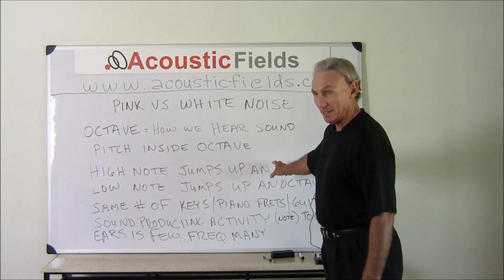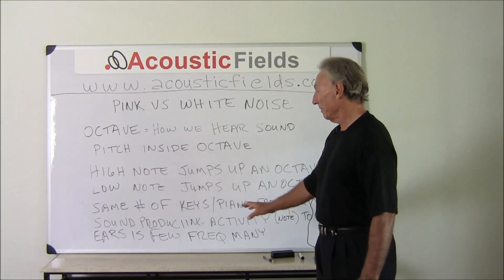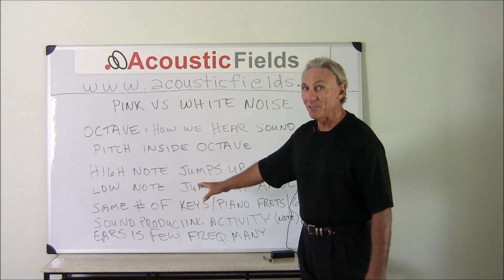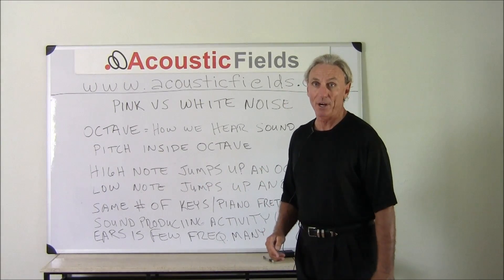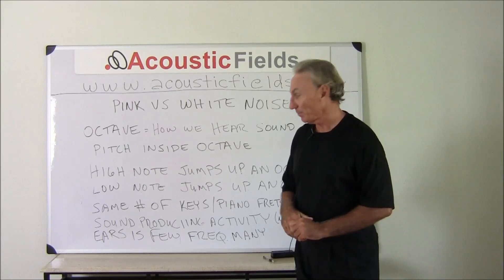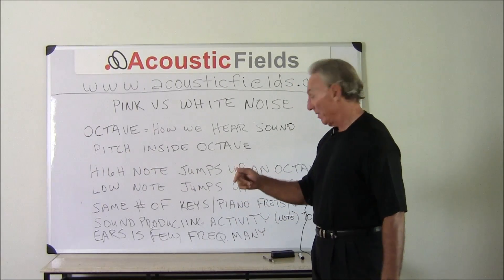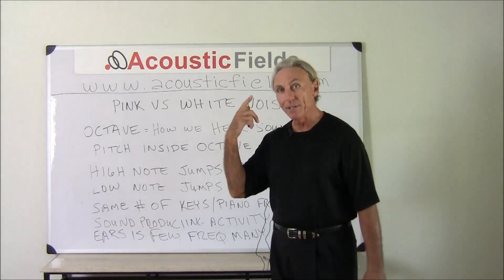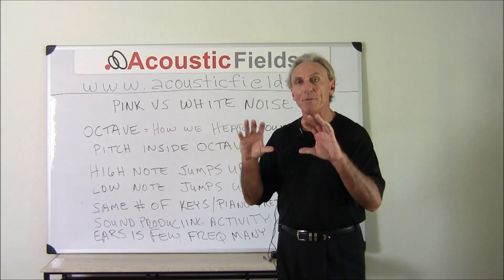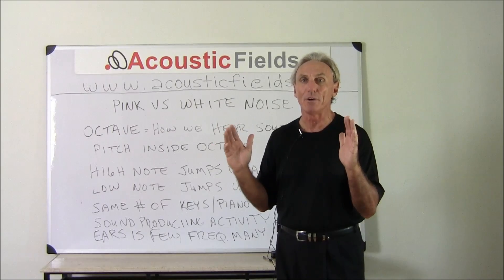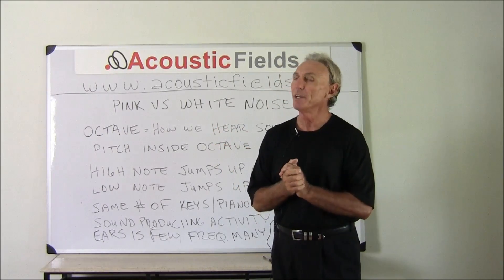Inside that octave is pitch. You hear singers say he has good pitch or she has good pitch — that pitch is found inside the octave range of our hearing. If a high note jumps up an octave and a low note jumps up an octave, it's the same number of keys on the piano or the same number of frets on a guitar. Sound-producing activity, or the notes to our ears, is a few bands — maybe five or six different bands of frequencies — but the number of frequencies is many.